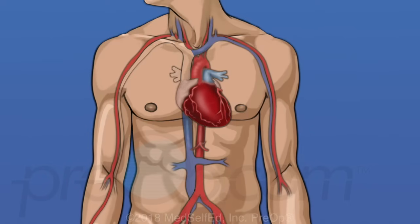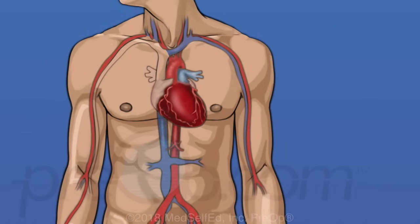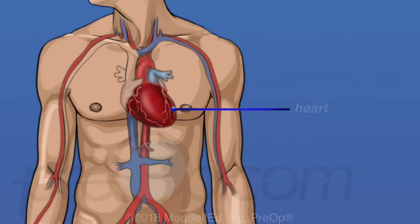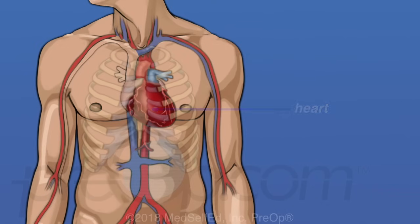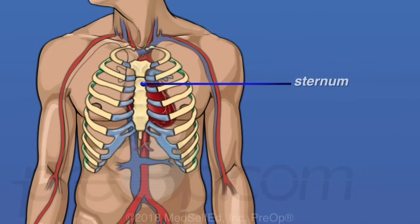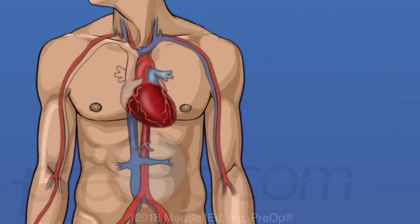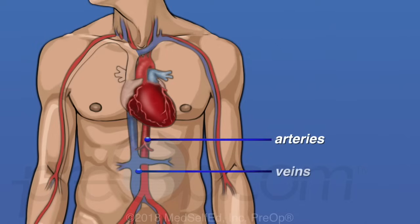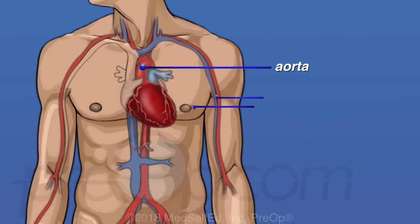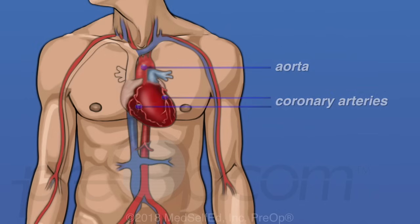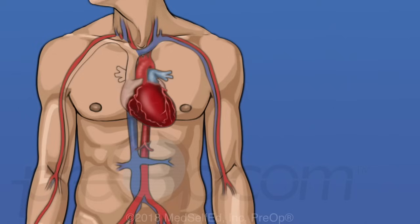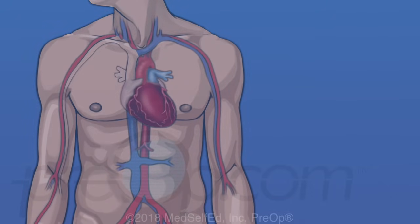Before we talk about this procedure, let's review some information about your body and your medical condition. The heart is in the middle of the chest, under the ribs. It is protected by the sternum, also called the breastbone. The heart is a muscle that pumps blood to all parts of the body through blood vessels called arteries. Veins are vessels that carry blood back to the heart. The aorta is the largest artery in the body. Two vessels that branch off from the aorta are the right and left coronary arteries. They supply the heart muscle with the oxygen-rich blood that is necessary to keep it working.